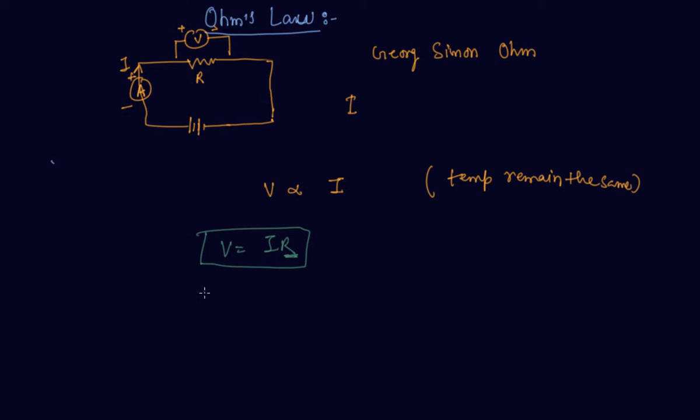SI unit of R is ohm, and it is also denoted by this symbol. So R is V by I.